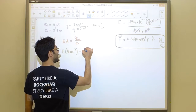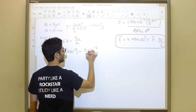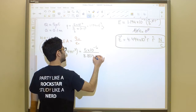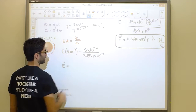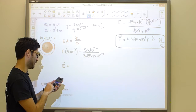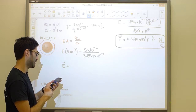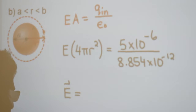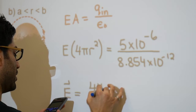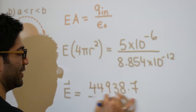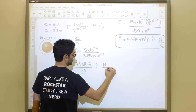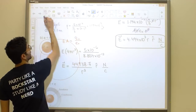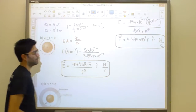So Q enclosed equals 5 times 10 to the negative 6 divided by epsilon naught, which is 8.854 times 10 to the negative 12. Computing this gives E equals 44,938.7 divided by r squared, in newtons per coulomb, directed radially outward. That is the answer to part b.